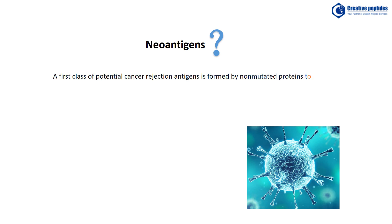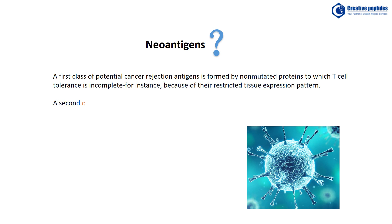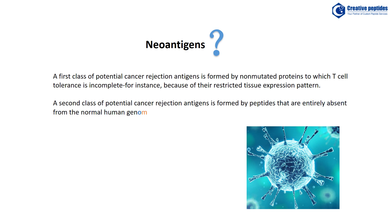On theoretical grounds, such cancer rejection epitopes may be derived from two classes of antigens. A first class is formed by non-mutated proteins to which T-cell tolerance is incomplete, for instance because of restricted tissue expression pattern. A second class is formed by peptides that are entirely absent from the normal human genome — so-called neoantigens.